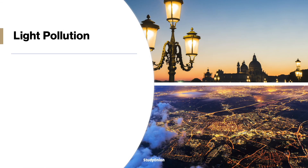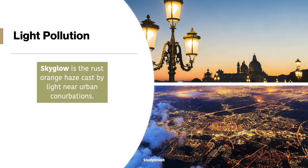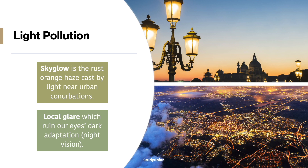Another issue for astronomers is light pollution. Sky glow is the rusty orange haze cast by lights near urban cities, and local glare comes from sports grounds, supermarket car parks, street lights, and security lights that ruin the dark adaptation of their eyes. Dark adaptation refers to the rods in human eyes which become accustomed to the night sky and, as a consequence, allow us to distinguish and see with more clarity.